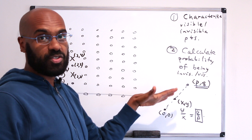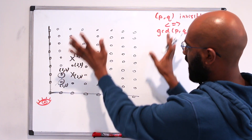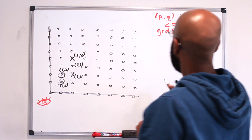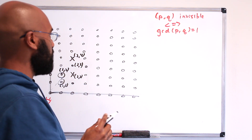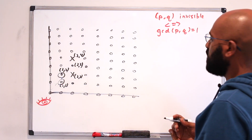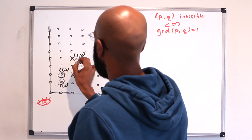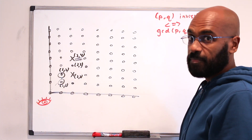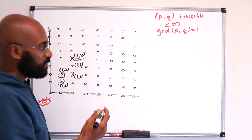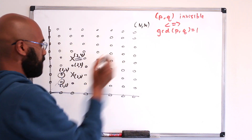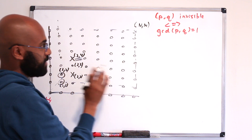Now let's use that characterization to calculate the probability of being invisible. One way to be invisible is if both coordinates share 2 as a common factor. We analyze an n by n grid and let n go to infinity to find the density. The total number of points is n². The number of points whose x-coordinate is even is the floor of n/2, and independently the same for the y-coordinate.